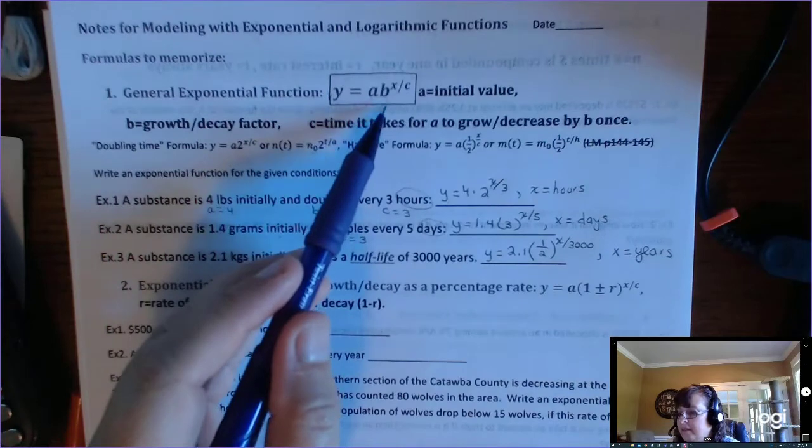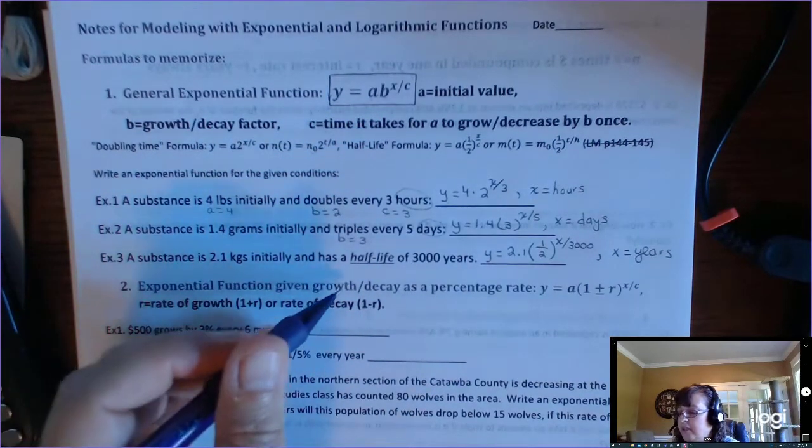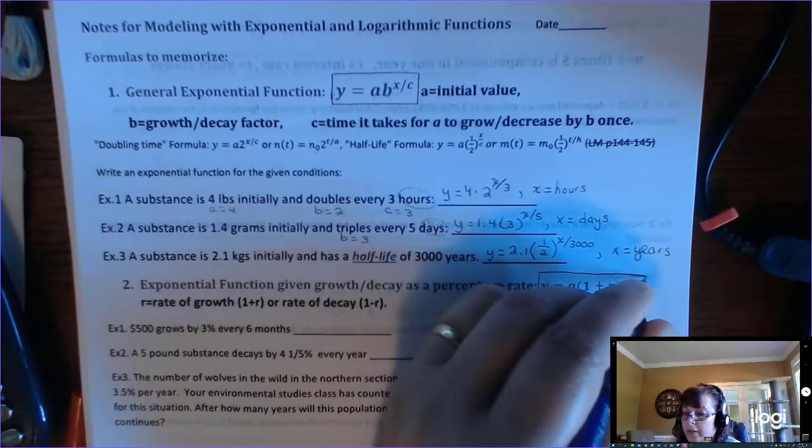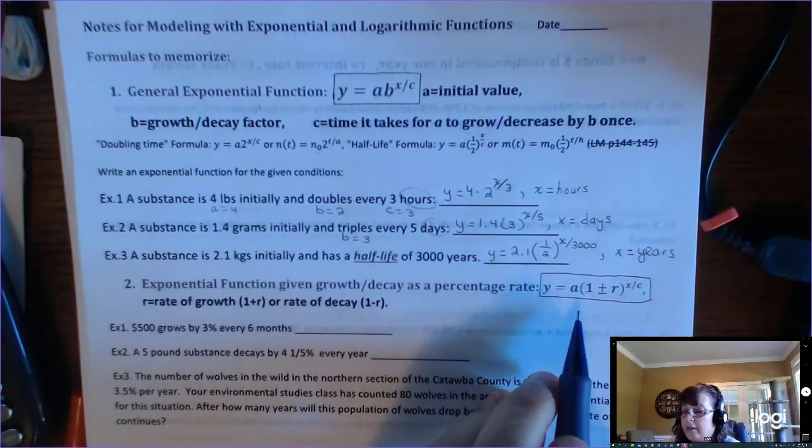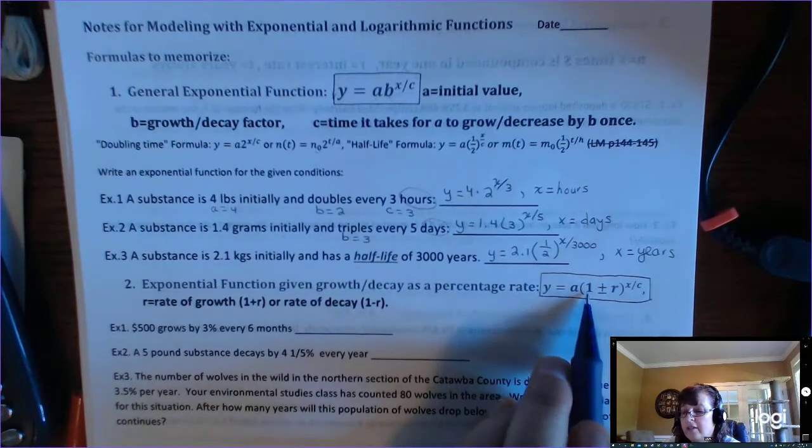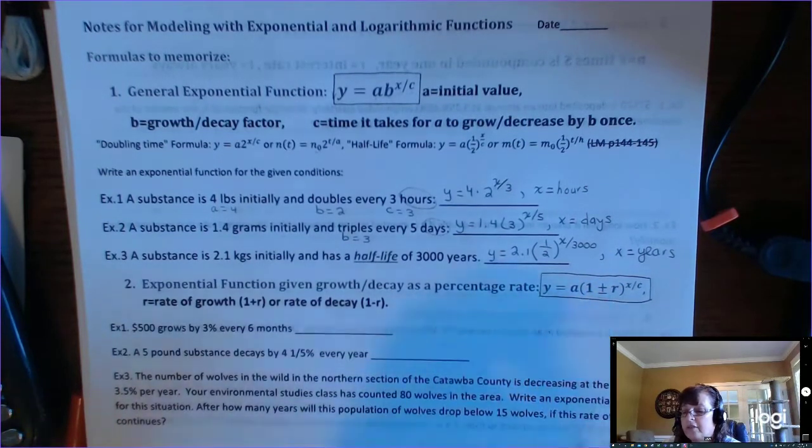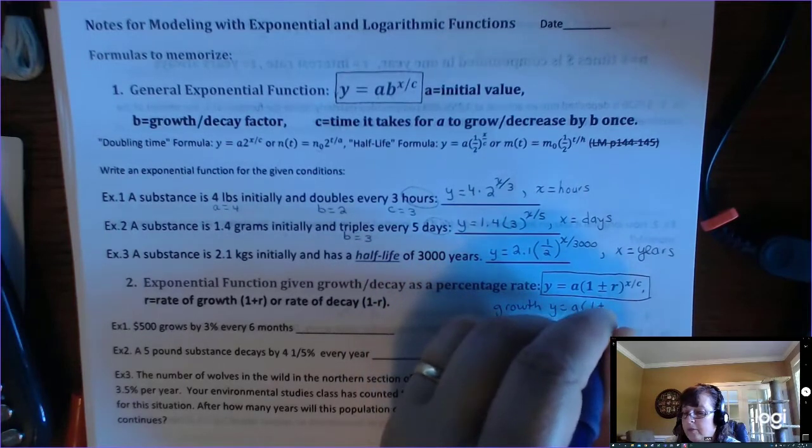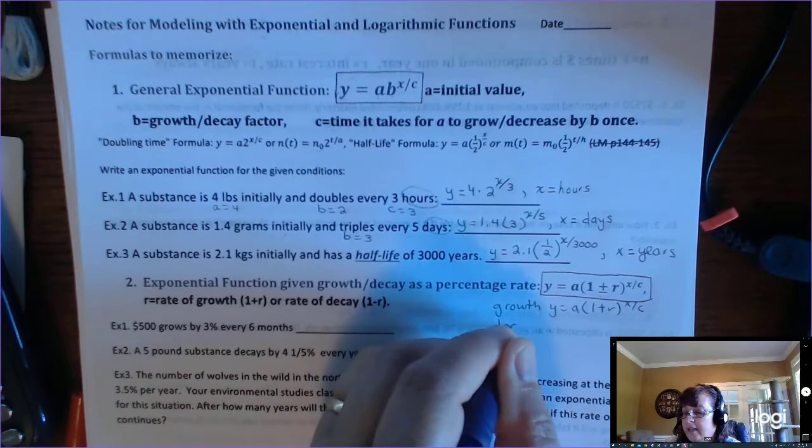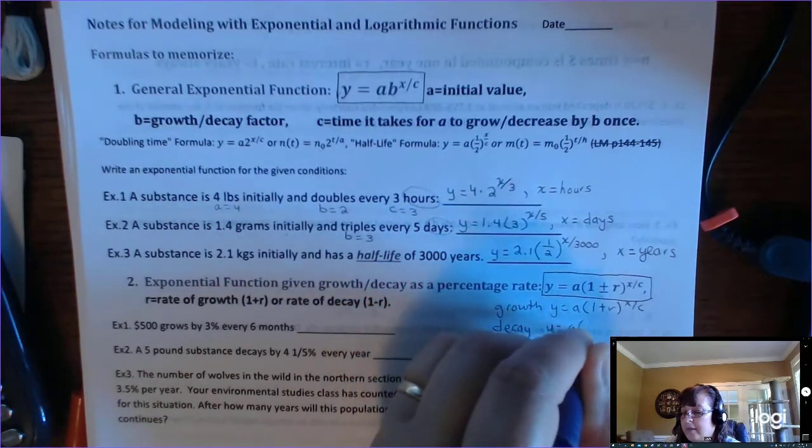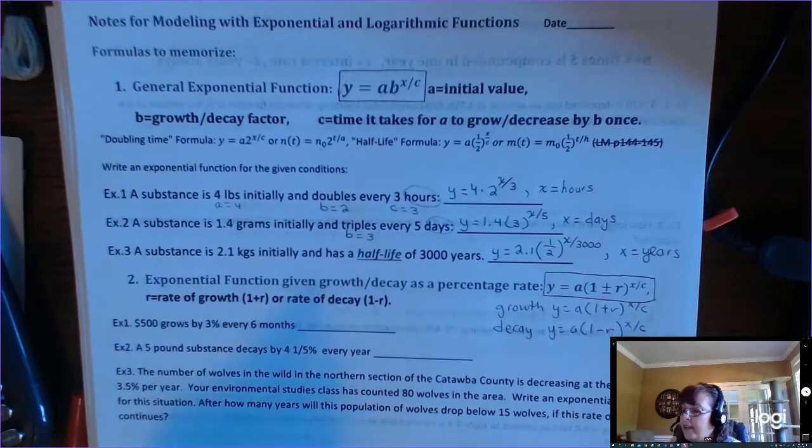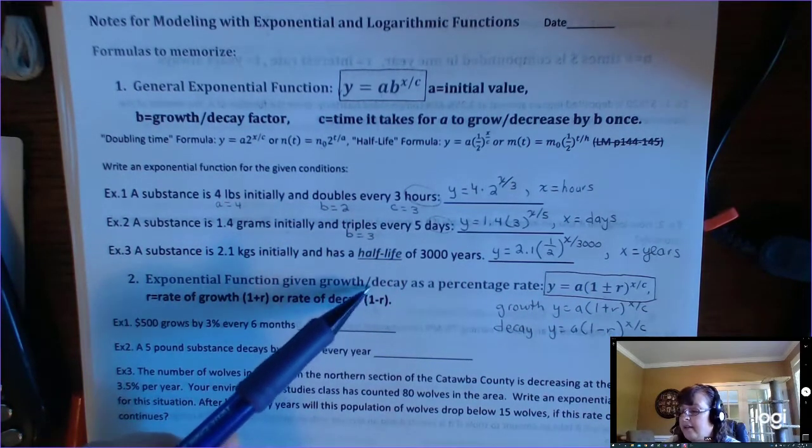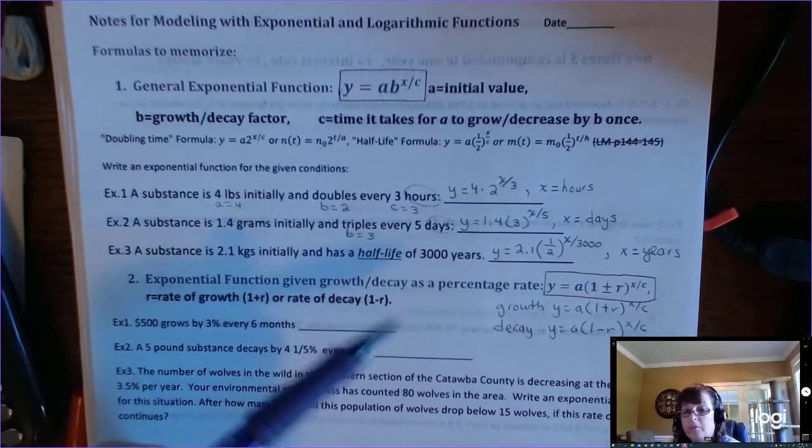This is an exponential function given growth and decay as a percentage rate. So here is your second formula. So everything looks exactly the same. You still have an initial value. You still have it to the X over C. That part's the same. The only thing that's different is the 1 plus or minus R. So that means that if it's growth, it's going to be Y equals A times 1 plus R to the X over C. And if it's decay, it's going to be Y equals A times 1 minus R to the X over C. And the reason that this 1 is here is because sometimes we give you the growth or decay, not as a factor, not as multiplied by 2, but as a percentage rate.